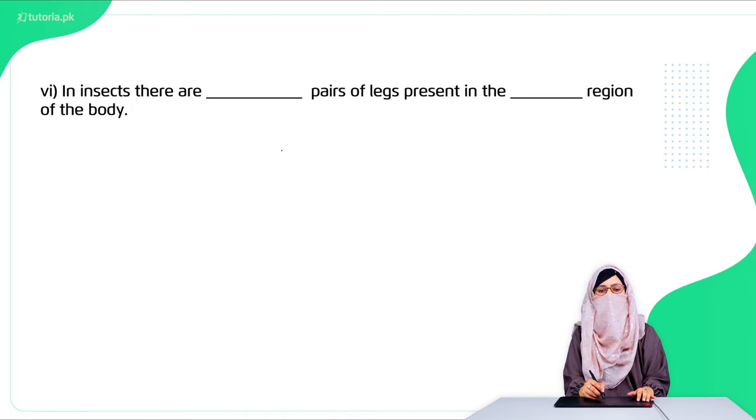Sixth: in the insect there are three pairs of legs present in the thorax region of the body.